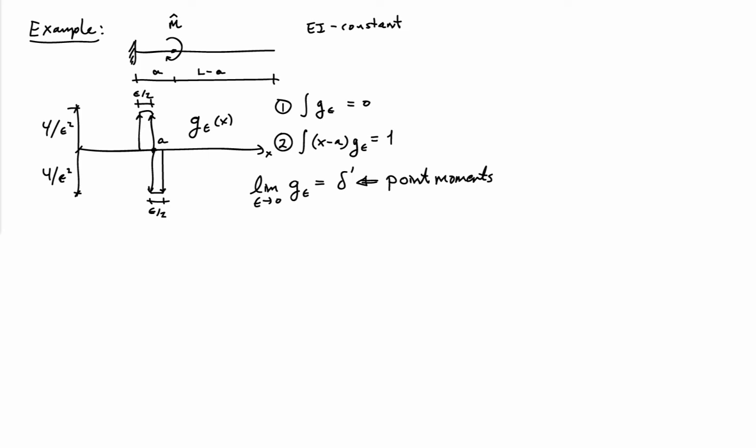The prime actually means derivative here, because if you look at this graph that I have for g epsilon, it's exactly the derivative of the graph that I used to develop the expression for a point force, which was the triangular load localized to the point A. So point moments are represented by the derivative of the delta function. So integrating the point moment expression, del prime, just gives me delta, the direct delta function.